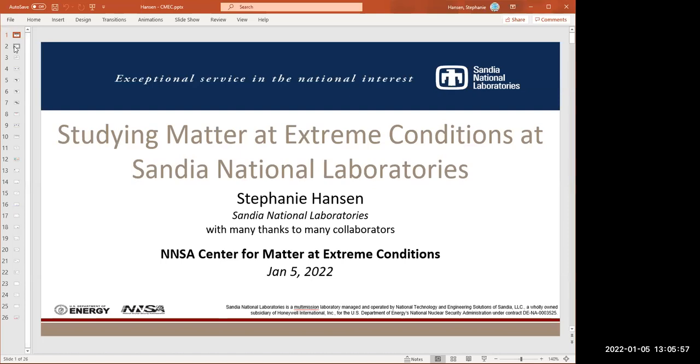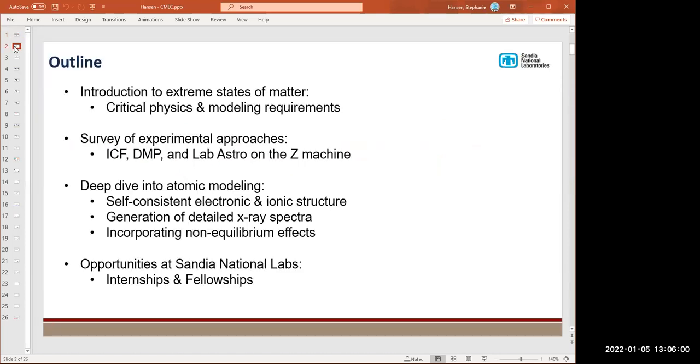This is a talk that has contributions from many people. What I want to do here is give a brief introduction to extreme states of matter from the perspective of modeling requirements and physical phenomena, then talk about how we create hot, dense matter and focus on efforts at Sandia on the Z machine. Then we'll take a deep dive into atomic modeling, talking about recent developments generating self-consistent atomic models that incorporate the effects of squishing plasmas together at high densities and pressures, how you generate detailed X-ray spectra and incorporate non-equilibrium effects. Finally, I'll talk about opportunities at Sandia, internships and fellowships, and hopefully some of you will join us.